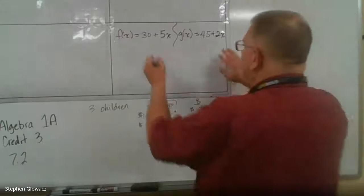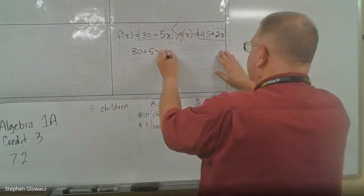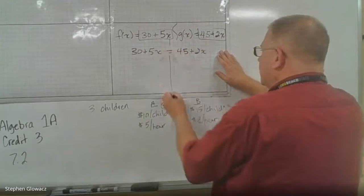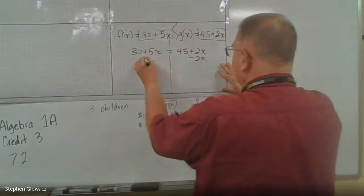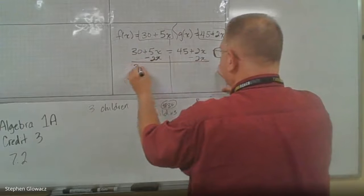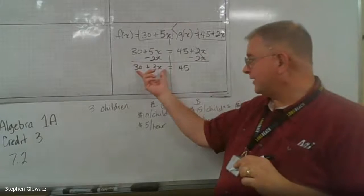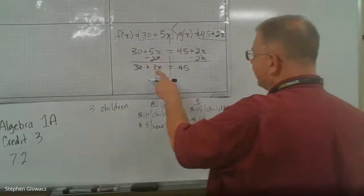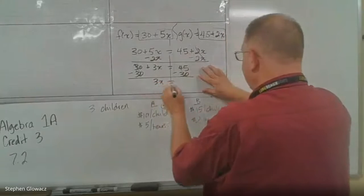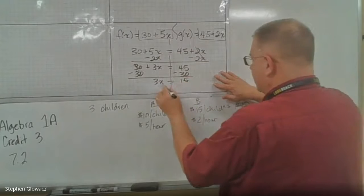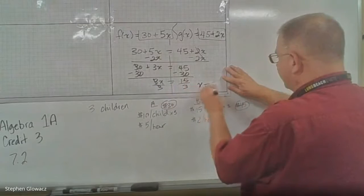When will they charge the same amount? We take the two functions and set them equal: 30 plus 5X equals 45 plus 2X. We have variables on both sides — 5X and 2X. We subtract the 2X from both sides, giving us 30 plus 3X equals 45. Now subtract 30 from both sides: 3X equals 15. Divide by 3, and X equals 5.